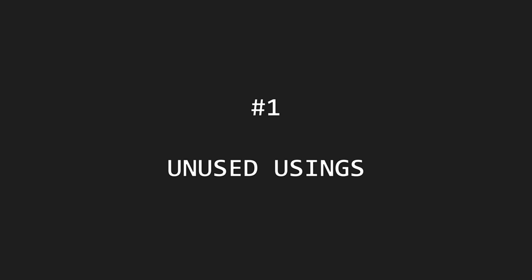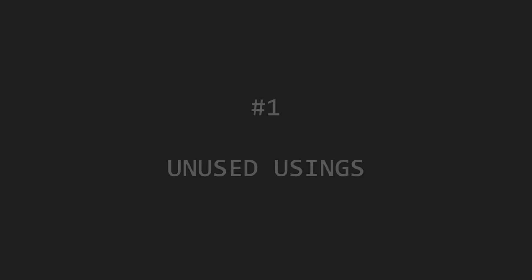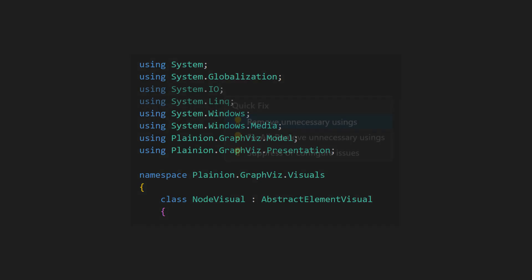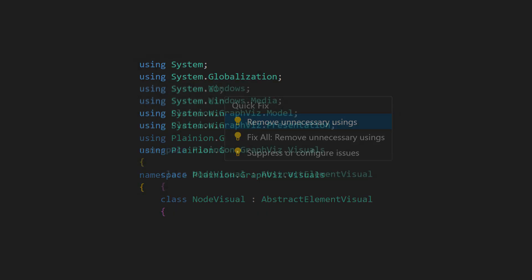Number one: unused usings. This can happen during refactoring or simply when trying different approaches to implement some functionality. But as most modern IDEs clearly indicate unused usings and even provide code fixes to remove them semi-automatically, this broken window can be fixed with almost no effort.